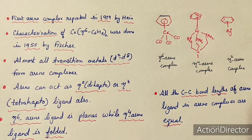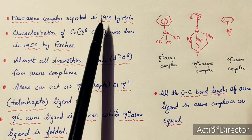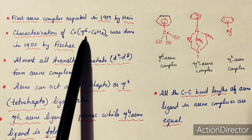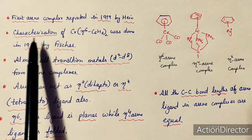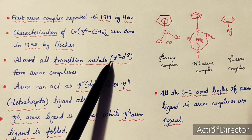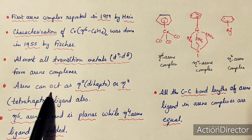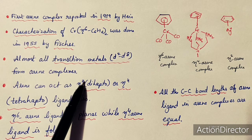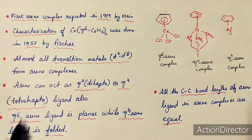The first arene complex reported was of chromium, reported in 1919 by Hein, but its characterization took place after about 30 years, done by Fischer in 1955. Almost all transition metals having d2 to d8 configuration form arene complexes. Arenes can act as eta-6, but can also act as eta-2, eta-4, or tetrahapto ligand types.